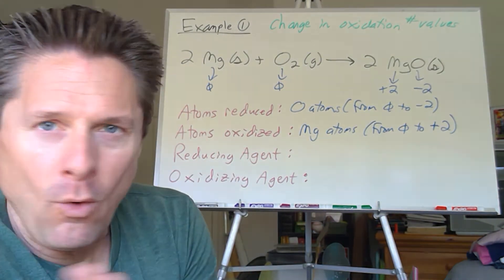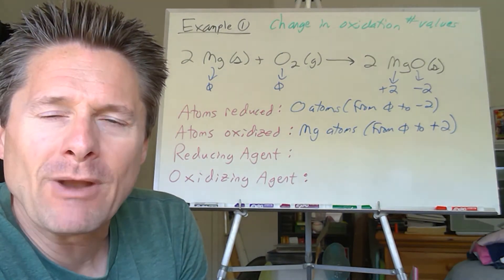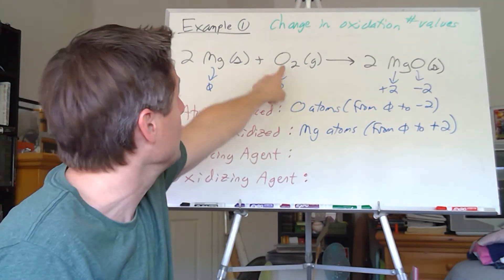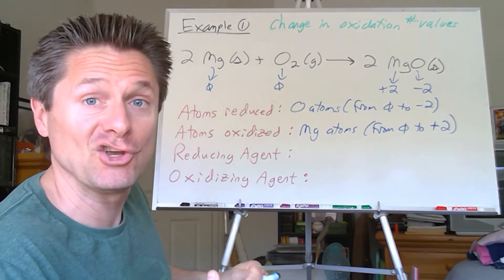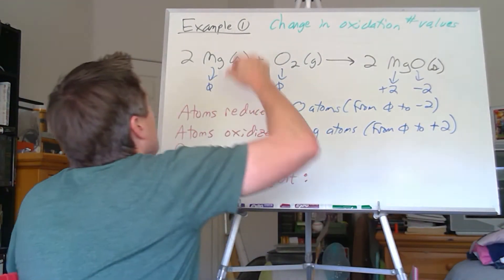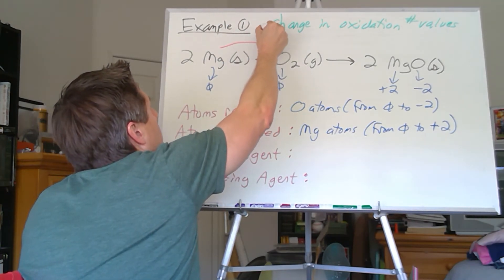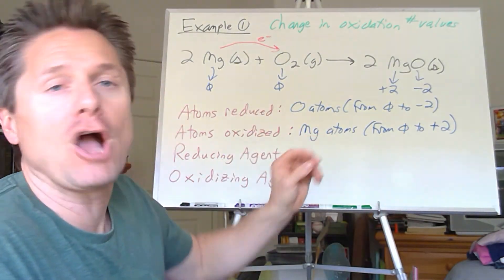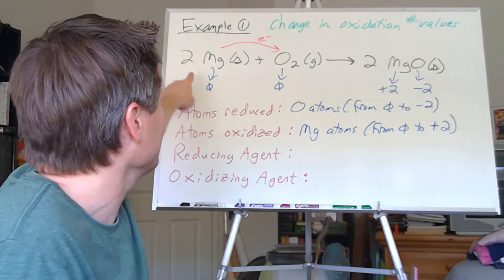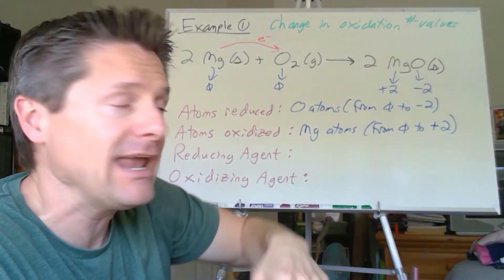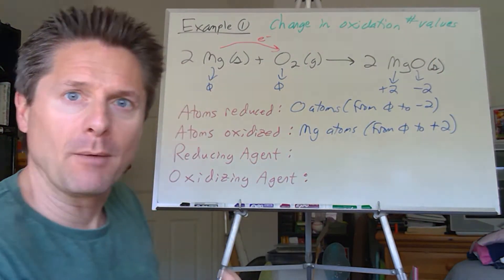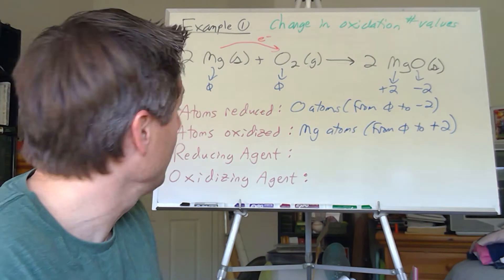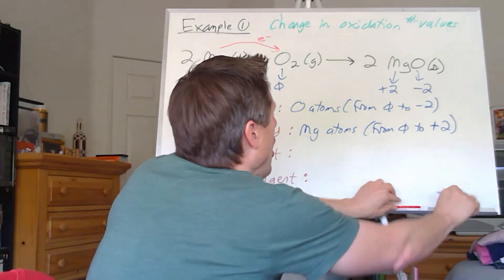Reducing agent is the reactant. The whole species. I like to include the state just to make sure I write the whole species. That caused something to be reduced. So what was reduced? The oxygen atoms were reduced. These were reduced. Which means, to be reduced, they had to gain electrons, which came from the magnesium. And if we looked at it down at the atomic level, each magnesium atom is losing two electrons. Each oxygen atom is gaining two electrons. That's why we have two magnesiums. Each one is giving two. Each oxygen is gaining two. It has to be a sum. The number of electrons lost has to equal the number of electrons gained. That would be pretty weird. You can't gain more than there were to start with. That would be weird.